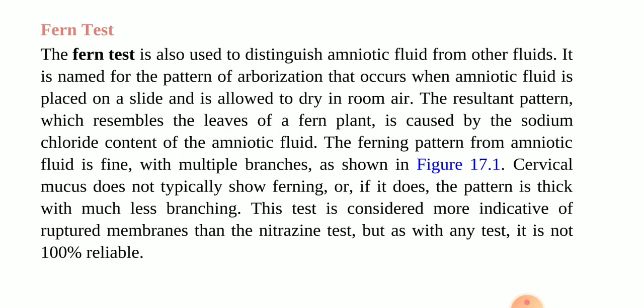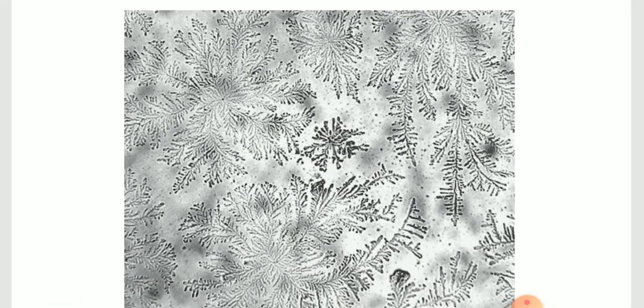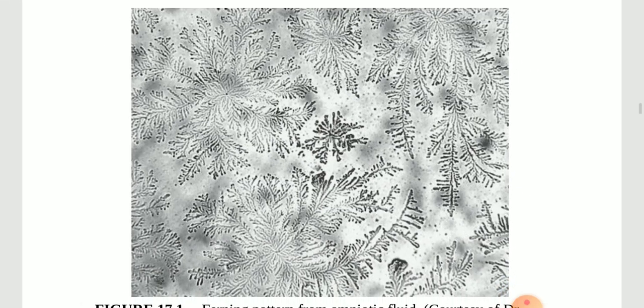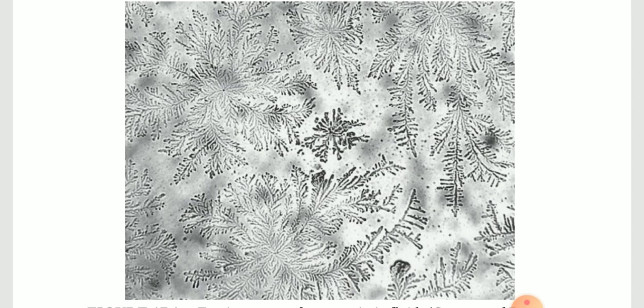In this test, we take a sample of the cervical or vaginal secretion — or amniotic fluid — and put it on a slide and let it dry. If it gives branching like a fern leaf, then we can say it is amniotic fluid. If there is less branching or it is a thick secretion, then we can say it is from the cervical secretion.